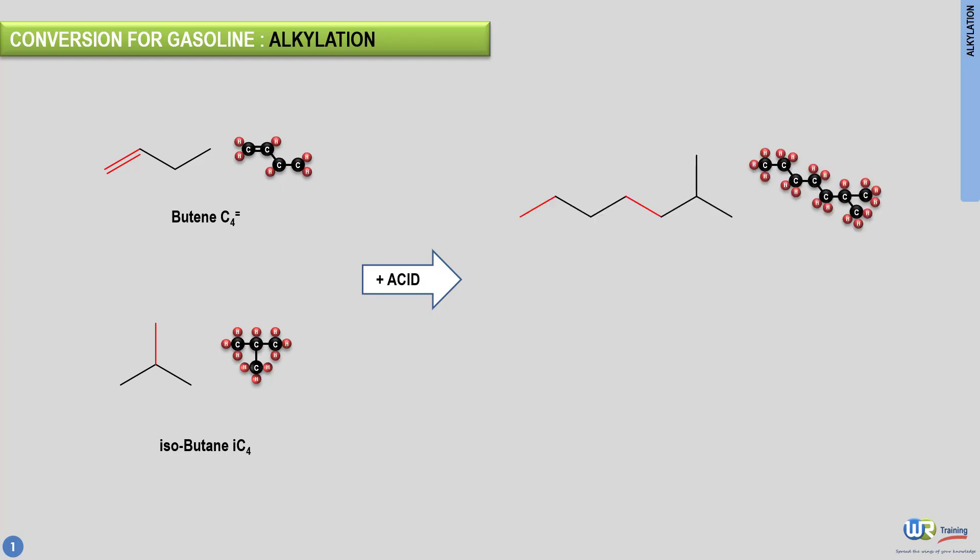Alkylate is an excellent gasoline blending component as it has no sulfur, no olefins, no benzene, has high octane number and a low Reid vapor pressure—a gasoline blender's dream.